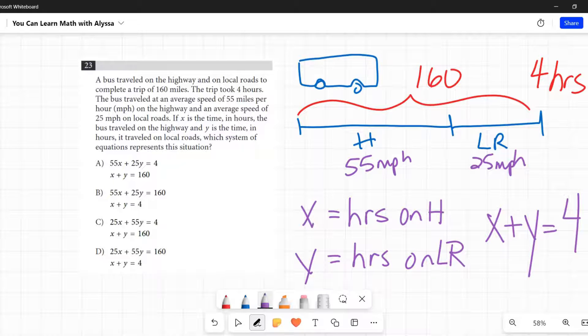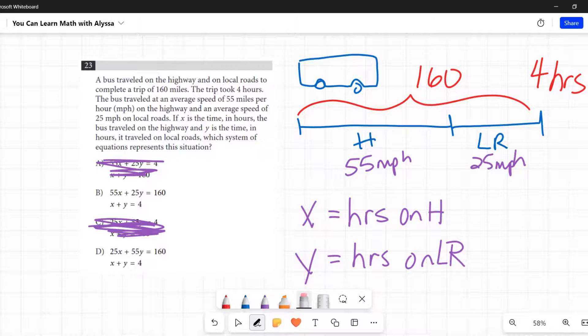That bus did not travel for 160 hours, it traveled for 160 miles. So already I know the two that say x plus y equals 160 are out, so I can eliminate them. Now I'm left with the two that say x plus y equals four. I'm going to erase that x plus y equals four for just a second, give me a little more room.